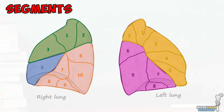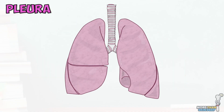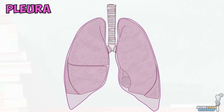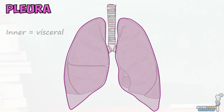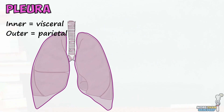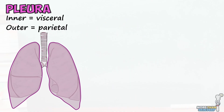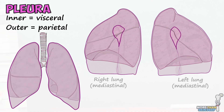Both lungs are surrounded by a double-layered sheath of serous connective tissue known as the pleura. The innermost layer, which is in direct contact with the surface of the lungs, is known as the visceral pleura, whilst the outermost layer, adhered to the internal thoracic wall, is the parietal pleura. These pleural layers join one another at the hilum of the lung.